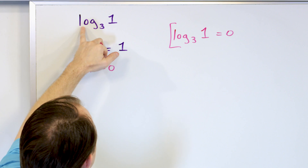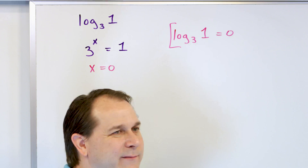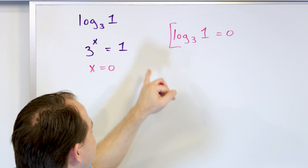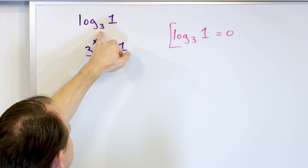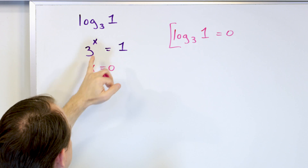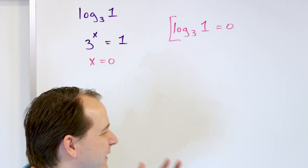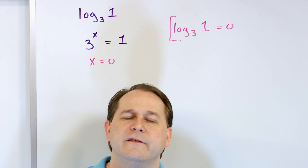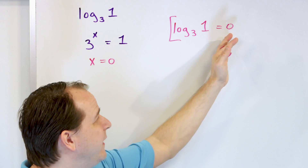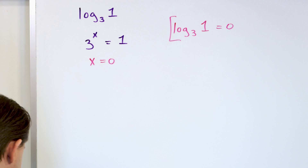In fact, the logarithm of any base of the number 1 is always going to be 0. If this were base 10, then 10 to the power of something equals 1 — x is still 0. If it were base 17, 17 to the power of something equals 1 — the exponent is always 0. So logarithm of the number 1, no matter what base you have, always gives you 0. That's something worth remembering, but if you forget it, you can always calculate it again.